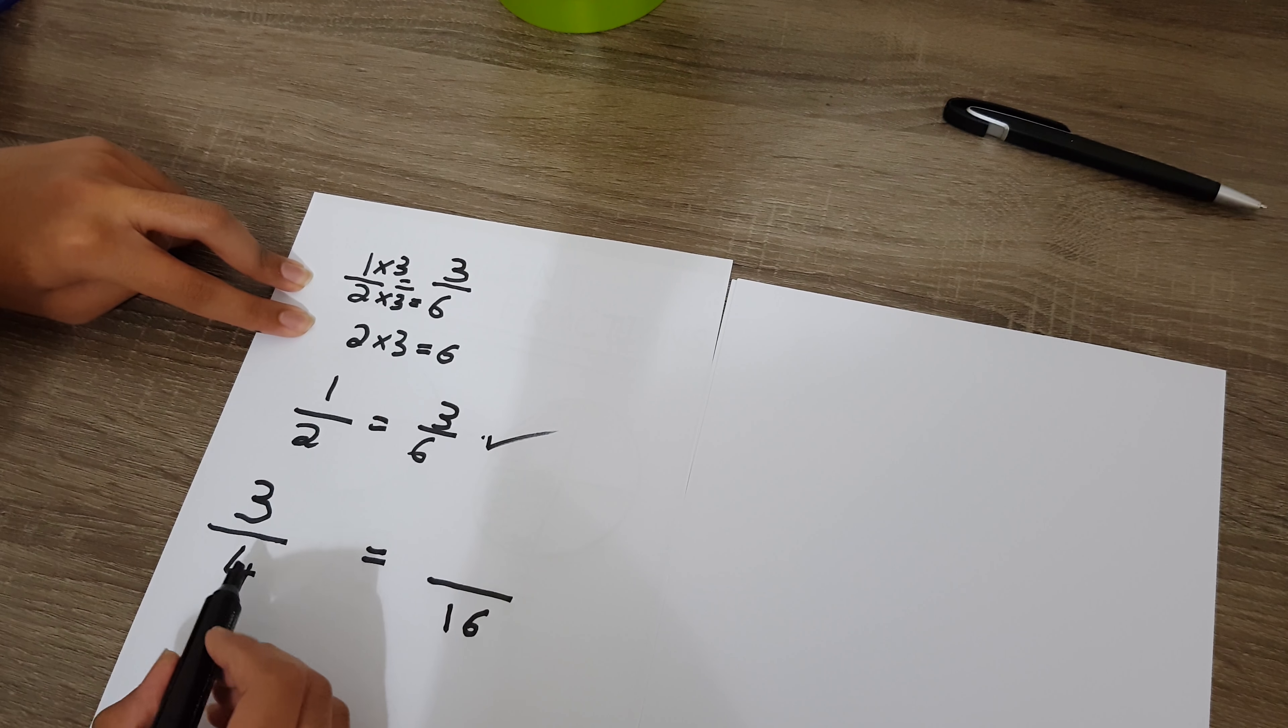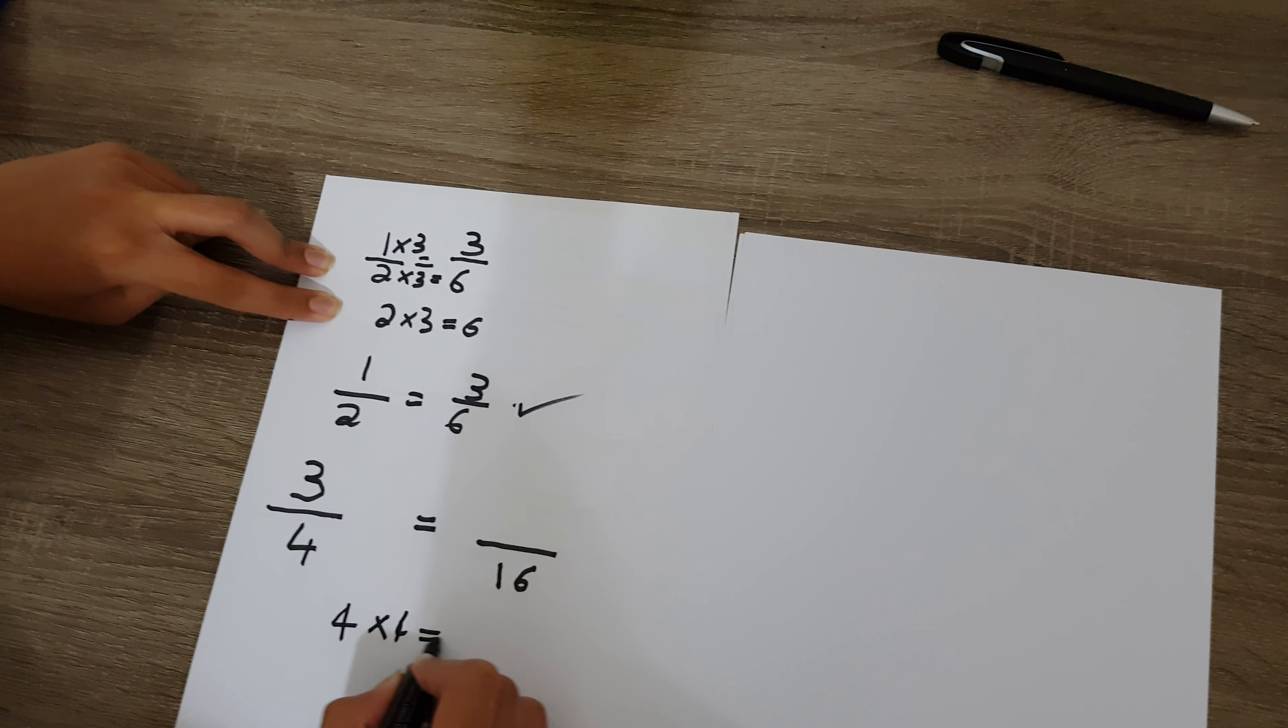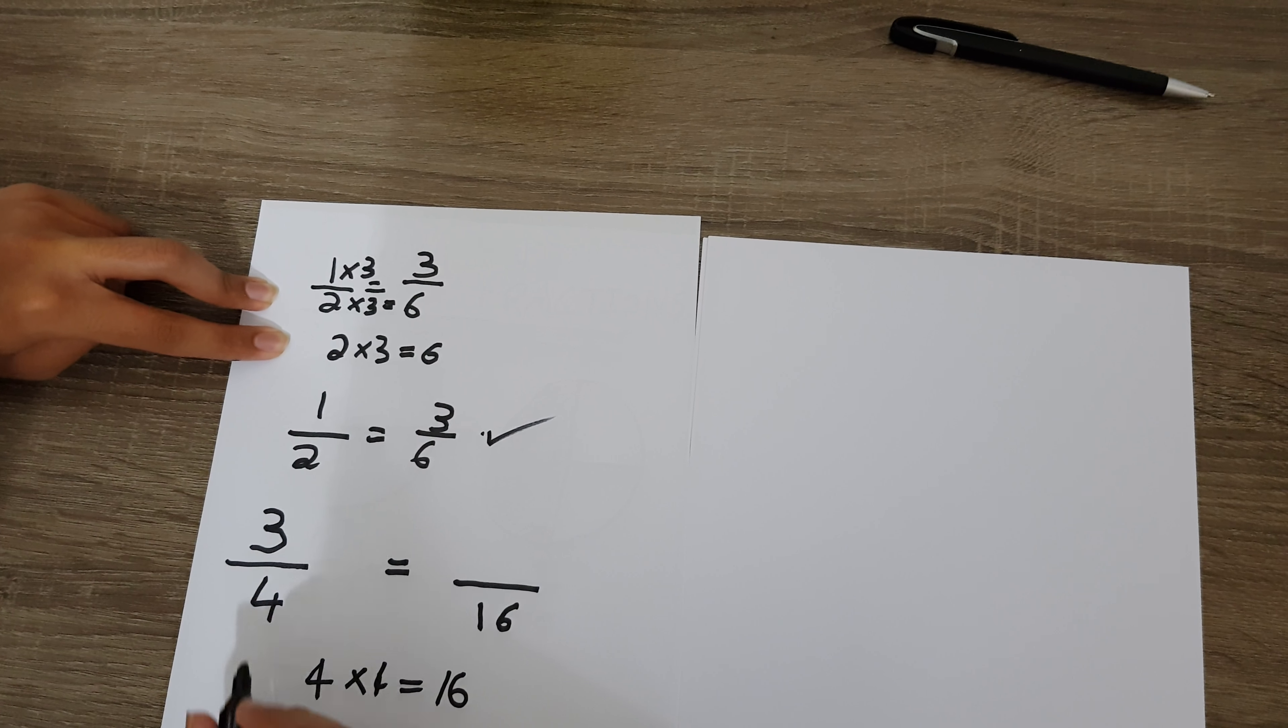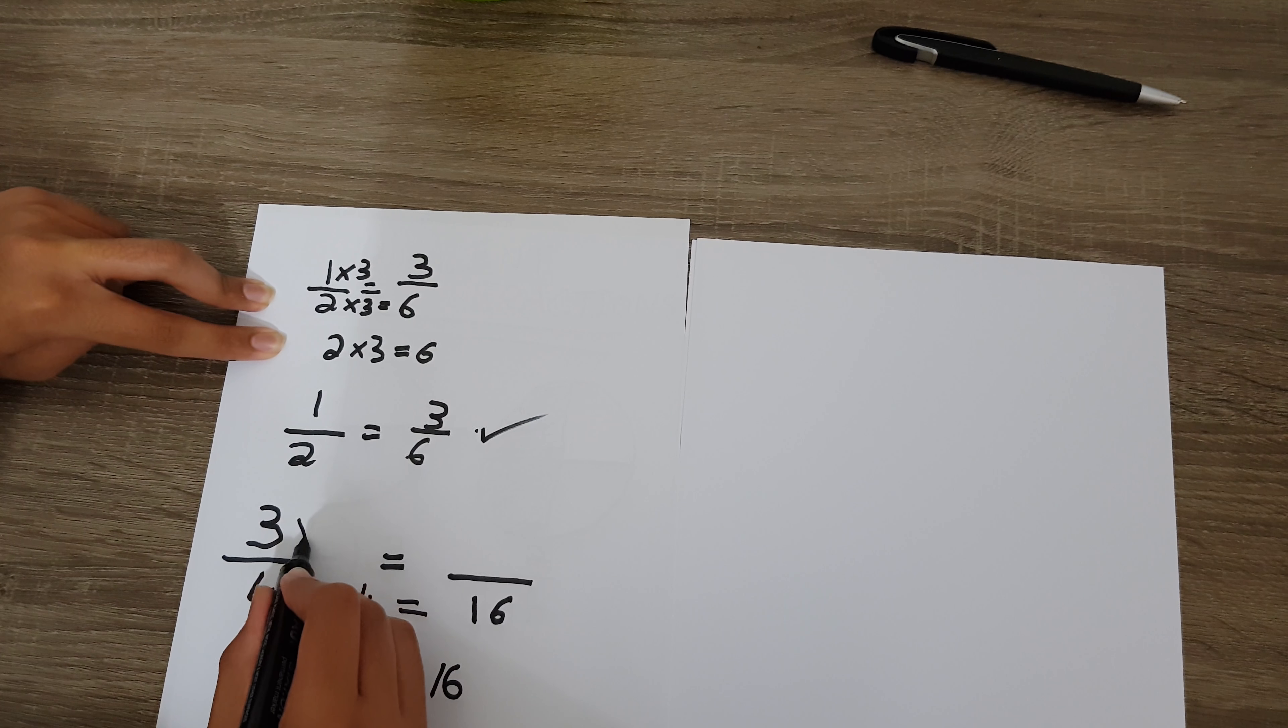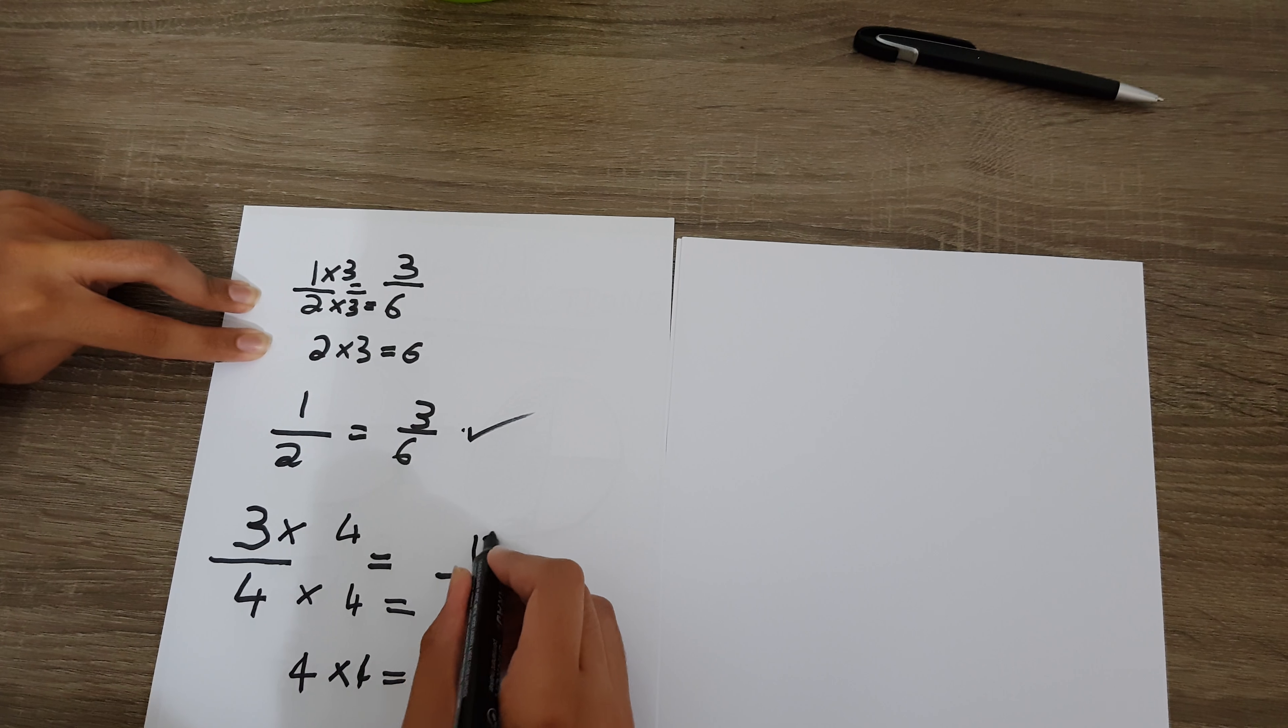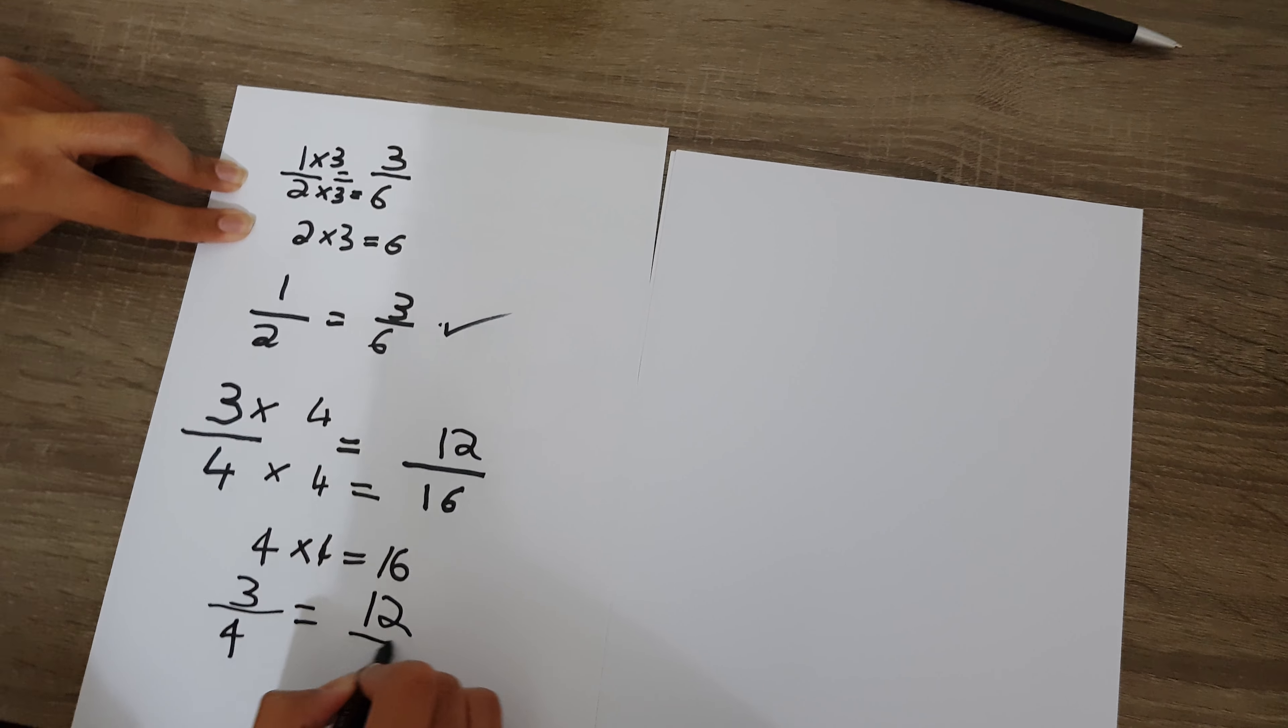So now we need to first see if four can go into 16. Well, four times four is equal to 16 as we know from our multiplication tables. We need to also multiply the three by four. So three times four will give us 12. So three over four is equal to 12 over 16.